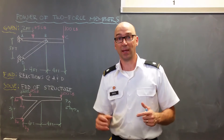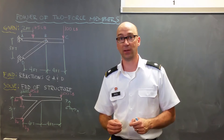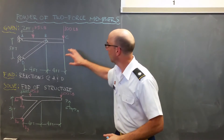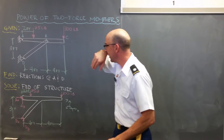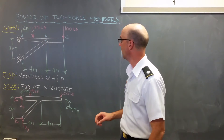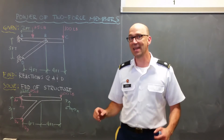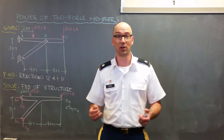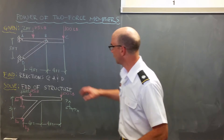We're working a problem today and I'm kind of stuck, so we're going to talk about one way to get ourselves unstuck in this equilibrium problem. We've got a structure with members ABC connected by member BD. You can see the dimensions and a couple of loads on that member. We're asked to find the reactions at A and D. At first glance, this looks like a basic equilibrium problem we've already been solving.